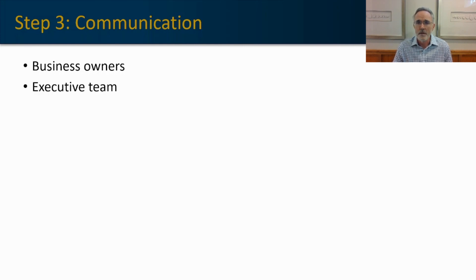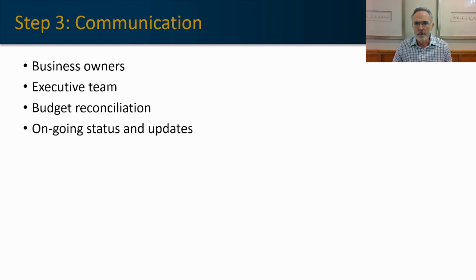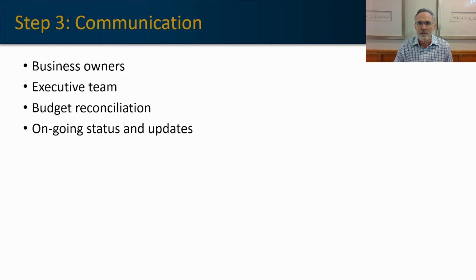Then you want to take it to the executive team. Hopefully at some point you get budget allocated. And lastly, you're going to want to give regular updates to the organization as to how you are going about mitigating these risks. Those are the key four communication steps coming out of a SWOT — strengths, weaknesses, opportunities, and threats — that is supported in an IT risk assessment type of process.